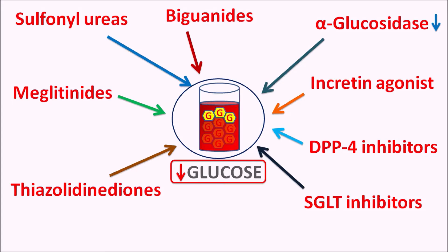Even though these categories are chemically different, the drugs within them are somewhat similar in pronunciation, suffix, and prefix, making it difficult to remember the classification. There may be confusion about which drug belongs to which category. In this video, we will see how to easily recognize a particular drug, its category, and how it acts as an anti-diabetic agent. We are not discussing insulin preparations, but the different anti-diabetic agents used in type 2 diabetes mellitus.